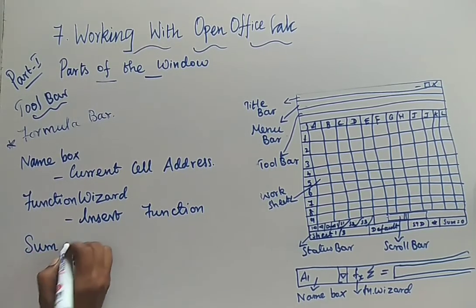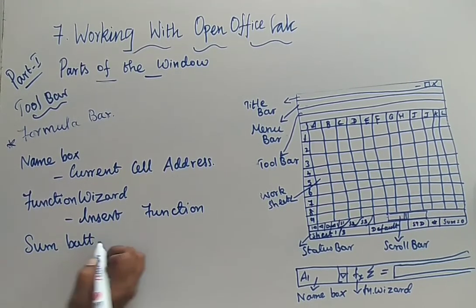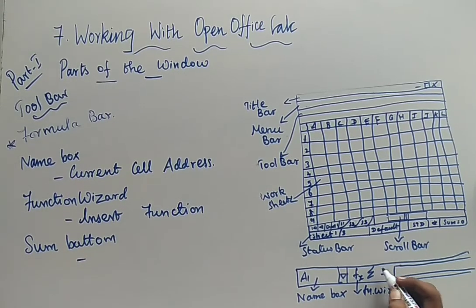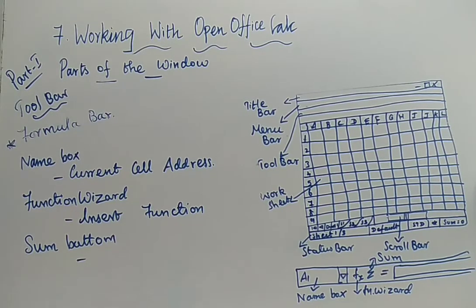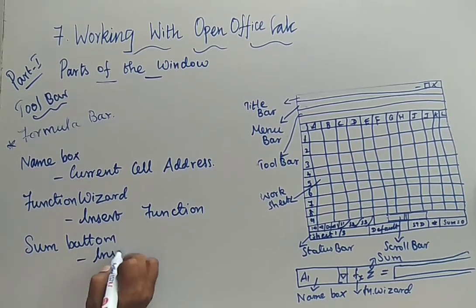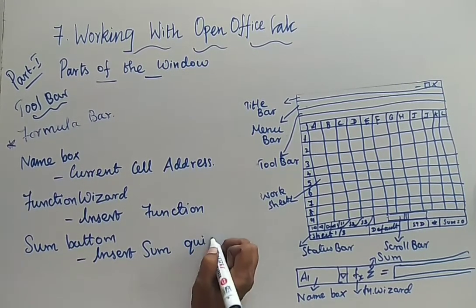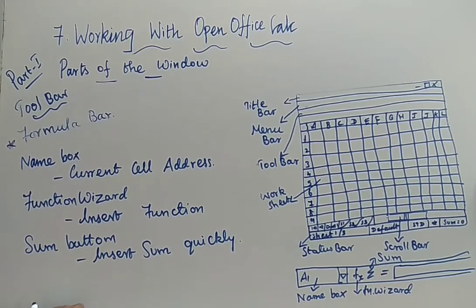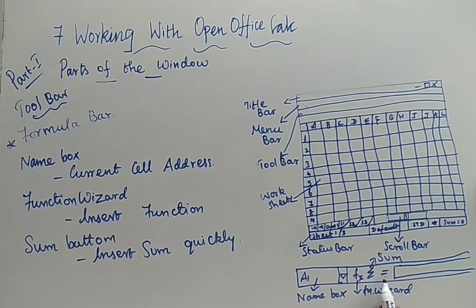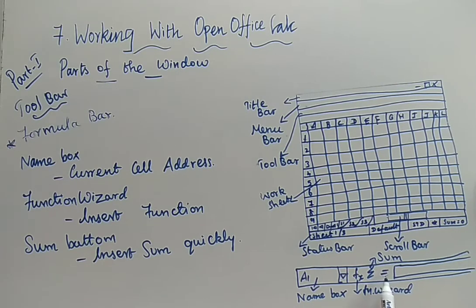And the next one is your Sum button. Sum means just to perform the addition — just by clicking this, you can have your total. Addition total can be done by this one. Insert the Sum button quickly. And next you are having the Function button — equal to. That is your Function button. Each and every equation or calculation must begin with this equal-to symbol only.